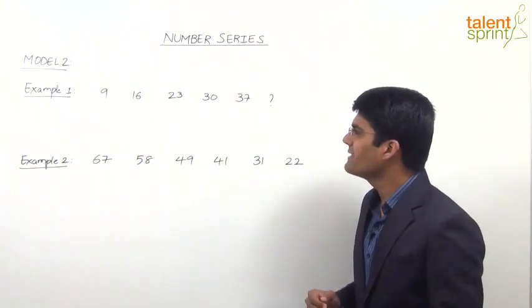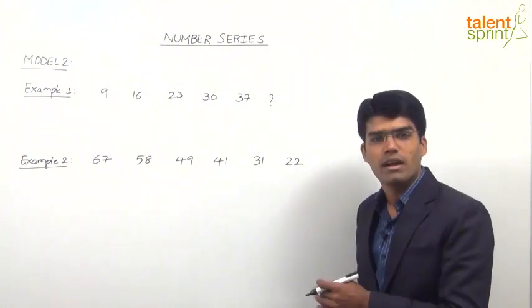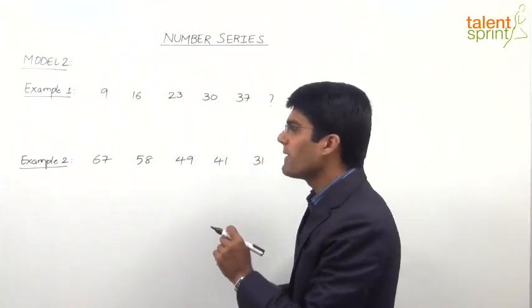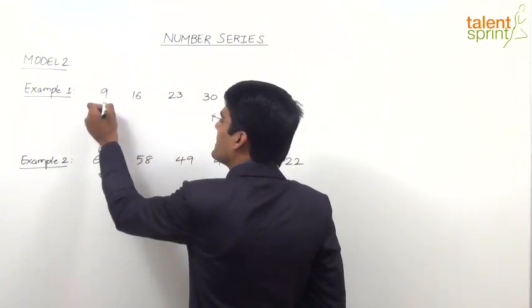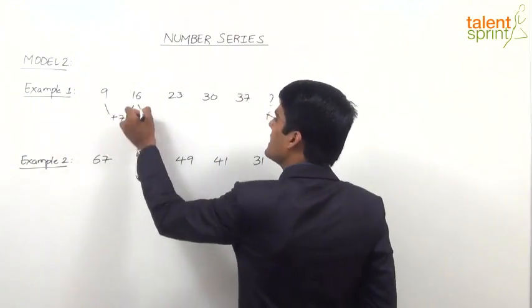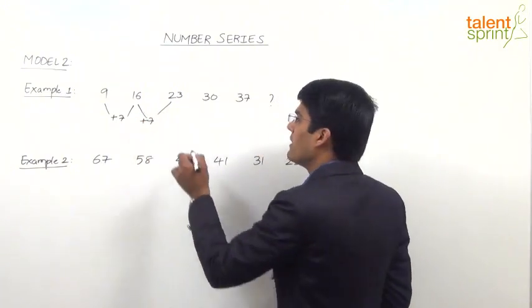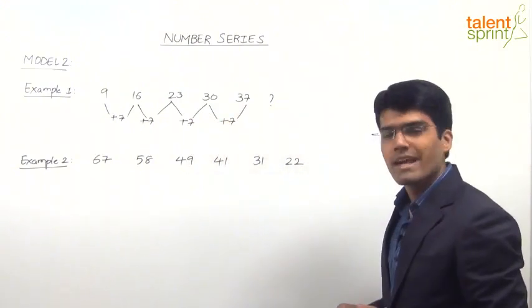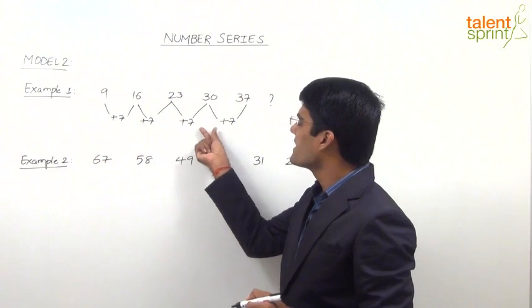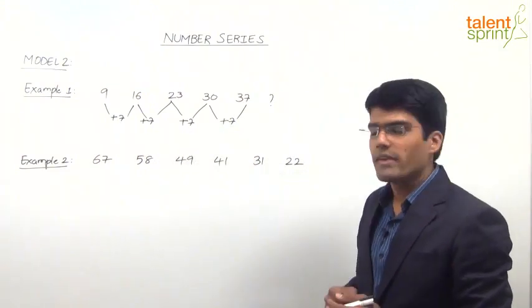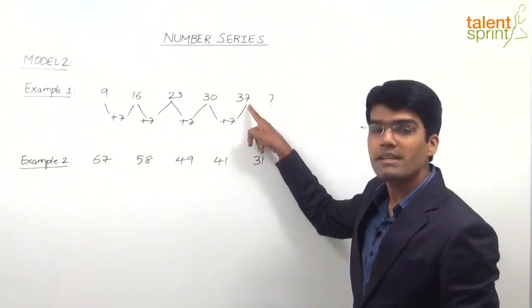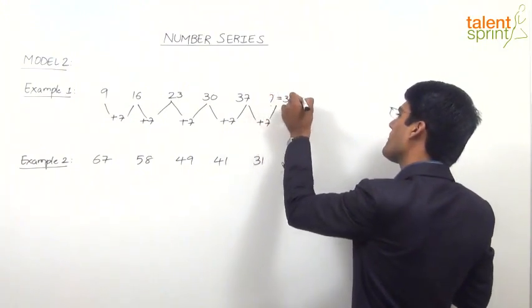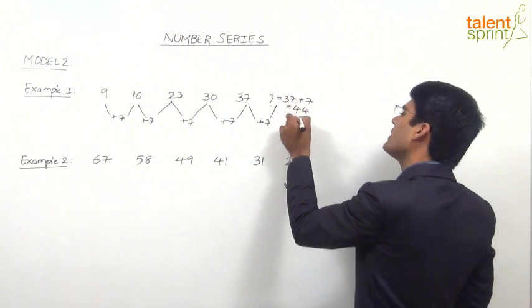The numbers are 9, 16, 23, 30, 37 and question mark. If you try to observe the difference between two consecutive numbers: 9 plus 7 gives 16, 16 plus 7 gives 23, 23 plus 7 is 30, and 30 plus 7 is 37. The difference between two consecutive numbers is equal to 7. So the next number in place of question mark should be 37 plus 7, which equals 44.